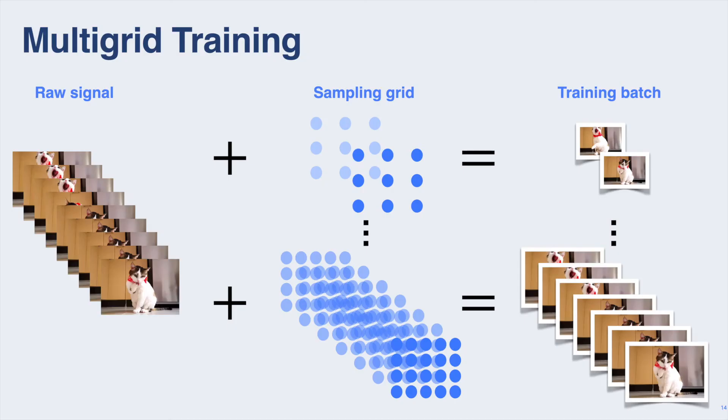We call our method multigrid training because we can view this process as sampling raw visual signals with different sampling grids. We took inspiration from multigrid methods for numerical analysis. Those methods leverage solving a coarse problem to speed up solving the full problem, analogous to how we use smaller clips to speed up training an accurate video model.